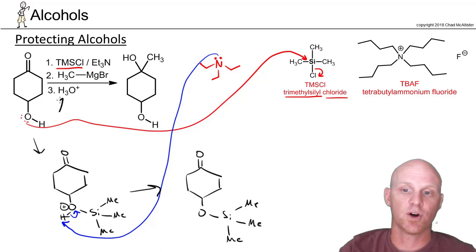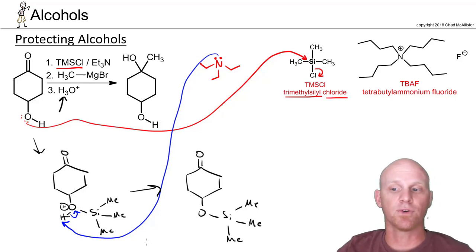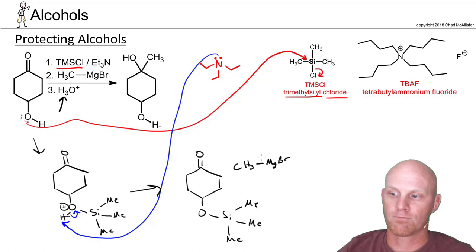But the big thing is that now I can add my Grignard reagent, and it's free to attack my ketone because there's no alcohol for it to react with in an acid-base reaction. So that's going to get us to an alkoxide ion with the methyl group attached.